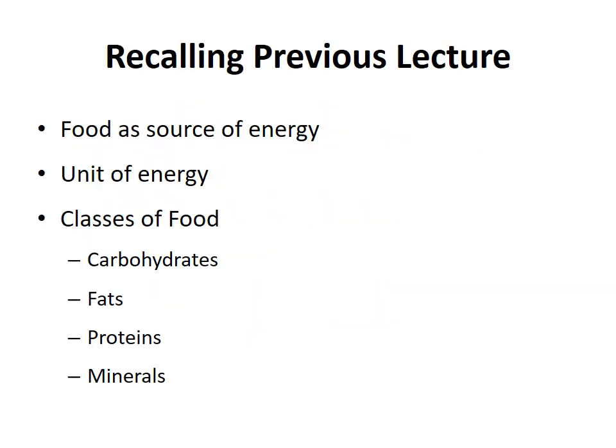Recalling your previous lecture, we discussed how food acts as a source of energy, what is the unit of energy — it was Joule, Kilojoule, Calorie or Kilocalorie — and there are 7 classes of food including carbohydrates, fats, protein, minerals, vitamins, fiber and water.